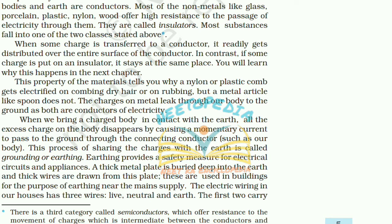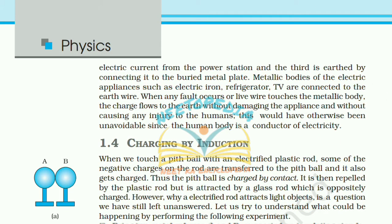The charges on metal leak through the body to the ground as both are conductors. When we bring a charged body in contact with the earth, all the excess charge disappears by causing a momentary current to pass to the ground through a connecting conductor. This process is called grounding or earthing. Earthing provides a safety measure for electrical circuits and appliances. The electric wiring in our houses has three wires: live, neutral, and earth. Metallic bodies of electric appliances such as electric iron, refrigerator, and TV are connected to the earth wire, so when a fault occurs the charge flows safely into the earth.